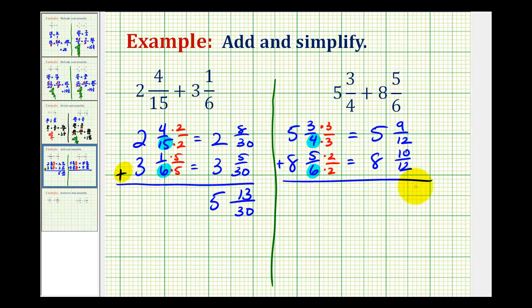So now we'll go ahead and add, starting with the fractions. Again, we have a common denominator, so we'll add the numerators. Nine plus ten is equal to nineteen. And here we have five plus eight, which is equal to thirteen.